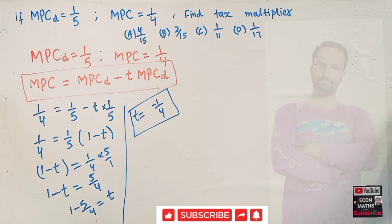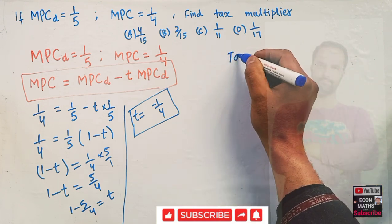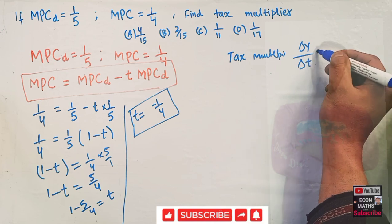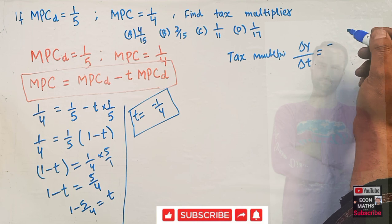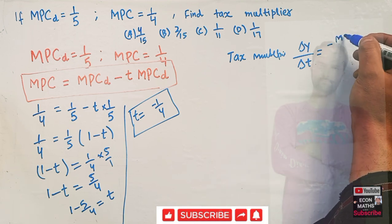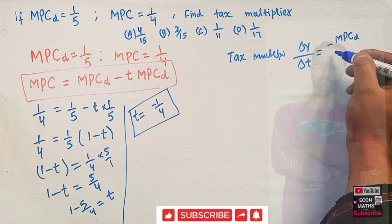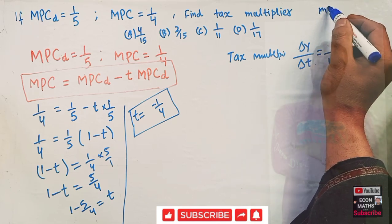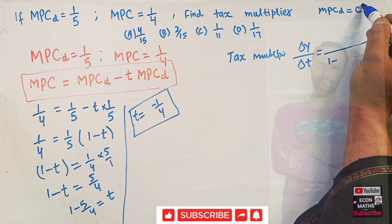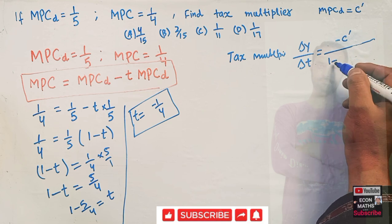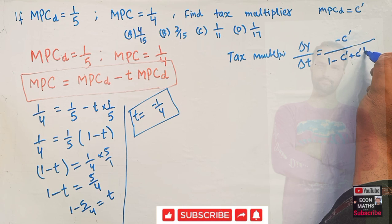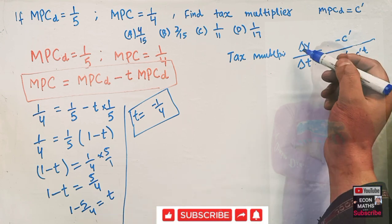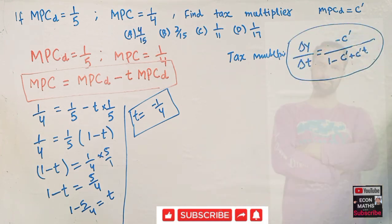Now, what is the formula for the tax multiplier? The tax multiplier is: change in income upon change in tax = -MPCD / (1 - MPCD + MPCD·T). Let us denote MPCD as C'. So the formula becomes: ΔY/ΔT = -C' / (1 - C' + C'·T). This tells us how much income will change if we change the tax.